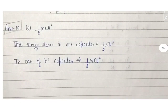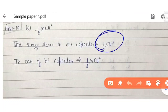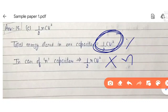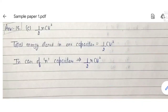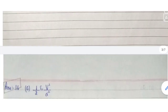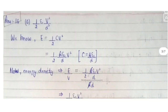Question 15: if N capacitors are connected in parallel to voltage V, what will be the total energy of the system? The energy of one capacitor is ½CV². If there are N capacitors, the total energy will be ½NCV².